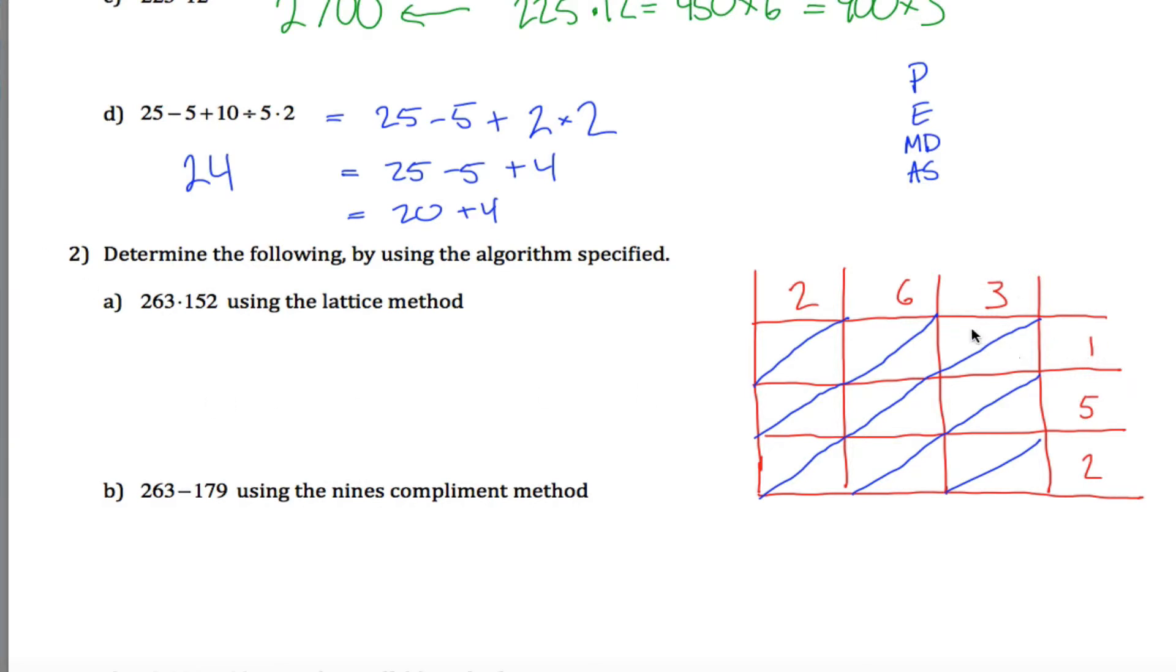So I'm going to kind of put these diagonals in and I'm going to fill in my grid. So 3 times 1 is just 3, which I could write as 0, 3. 6 times 1 is 6, which I could write as 0, 6. 2 times 1 is 2, 0, 2. 5 times 3 is 15. So I'll write the 1 there and the 5 there. 5 times 6 is 30. 3 there, 0 there. 5 times 2 is 10. 2 times 3 is 6. 2 times 6 is 12. 2 times 2 is 4.